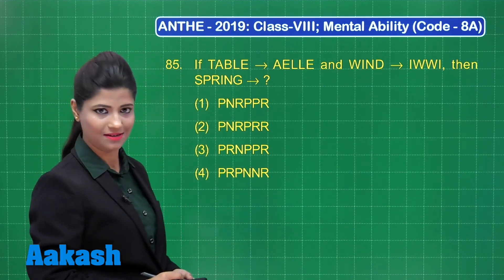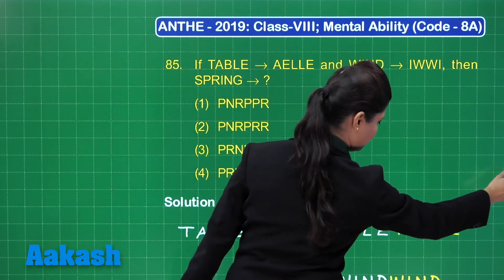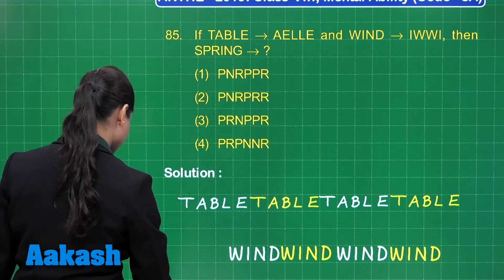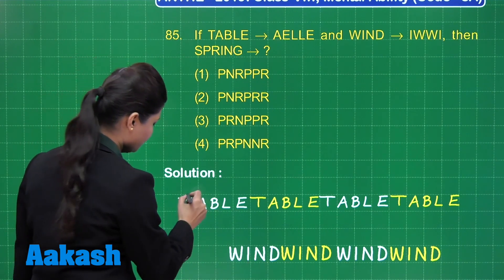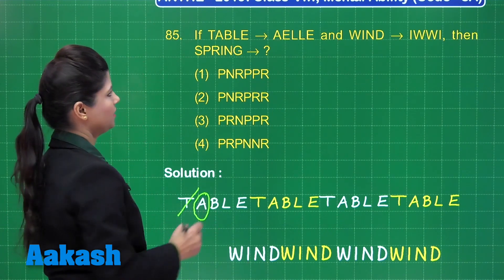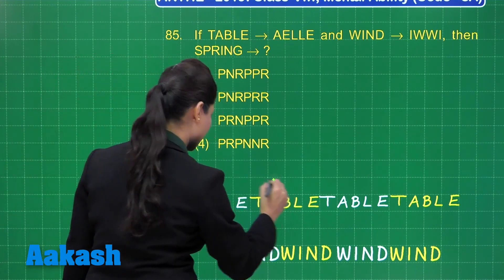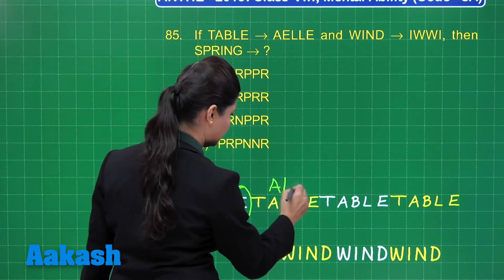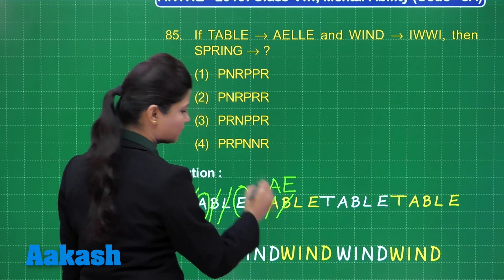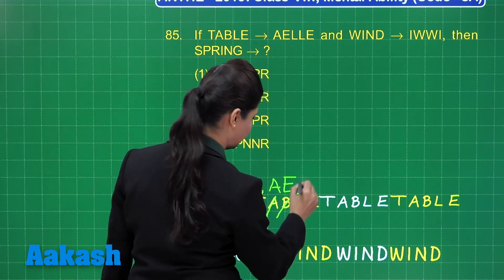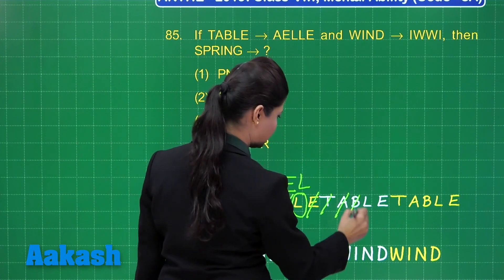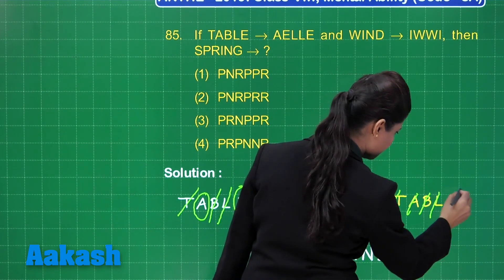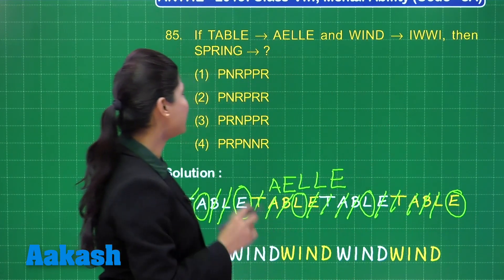There is an interesting pattern hidden here. When we consider 'table', you write it again and again. Firstly, you leave one letter and reach A — A is present there. Next, leaving two alphabets, you reach E. Then leaving three alphabets, you reach L. Leaving four alphabets, you reach L. Leaving five alphabets, you reach E. This is the coding for 'table'.